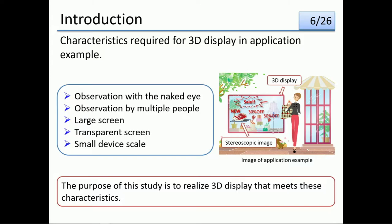There are several characteristics required for this application example for a 3D display. First, the observer can view with the naked eye without using special goggles. Second, multiple people can observe at the same time. Third, this 3D display requires a large screen. Fourth, the screen needs to be transparent to achieve augmented reality. The device also needs to be scaled down to easily install the 3D display.